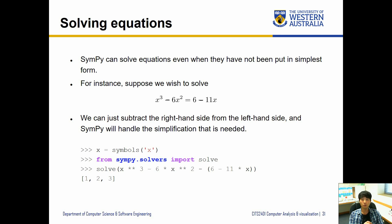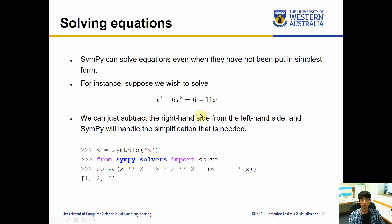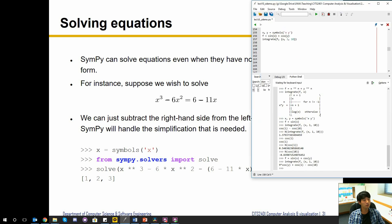For instance, suppose we wish to solve x³ - 6x² = 6 - 11x. We can just subtract the right-hand side from the left-hand side, and SymPy will handle the simplification. As long as we put everything onto one side and set the other side equal to zero, we can solve that.